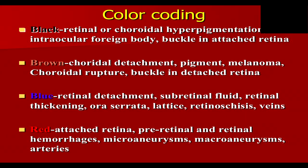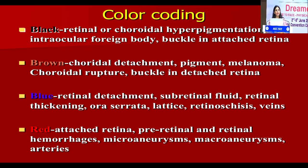Color coding is very important — it is a very important part of indirect ophthalmoscopy. Color coding: black is retinal or choroidal hyperpigmentation or intraocular foreign body. Brown is anything related to the choroid — choroidal detachment, pigment, melanoma, choroidal rupture. Blue is detached retina, subretinal fluid, retinal thickening. Red is a flat retina or any kind of retinal hemorrhage, microaneurysms. Orange is elevated neovascularization. Purple is flat neovascularization. Green is anything inside the vitreous cavity — vitreous hemorrhage, CNVM, fibrous proliferation. Yellow is hard exudate, subretinal hemorrhage, or active chorioretinitis.